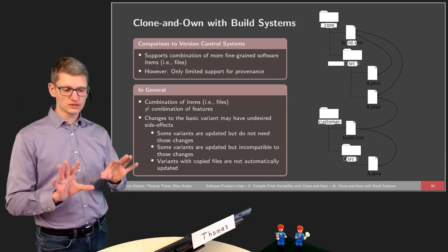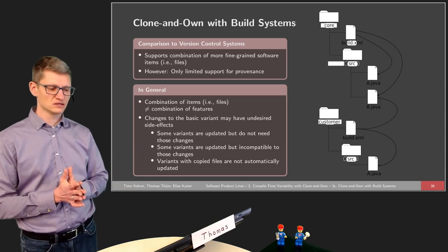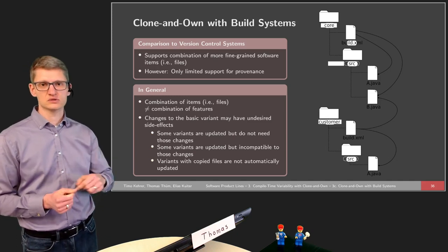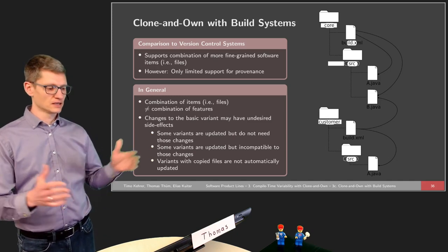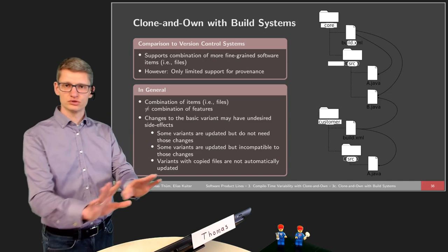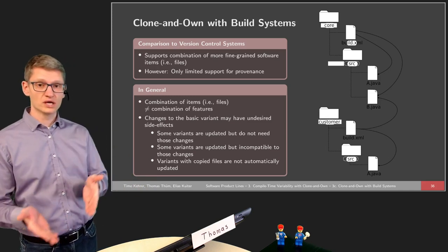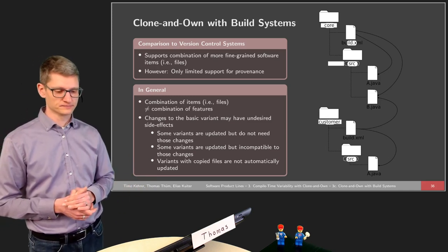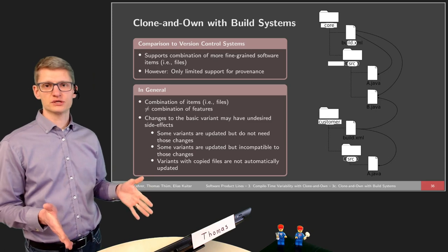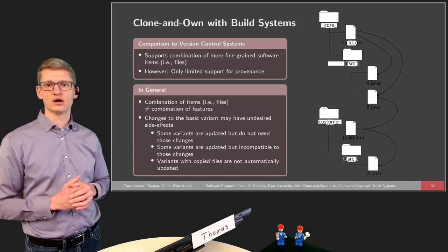However, build systems have limited — almost no — support for provenance. We can see where files are taken from, but we do not know when those files were copied and where they were cloned from. That's why in practice, even if you use a build system for clone and own, you would still combine it with version control. In general, this is not yet our vision of a software product line, because in a software product line we want to combine features, not files or items.